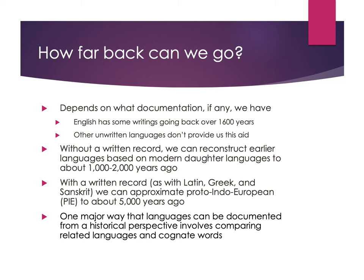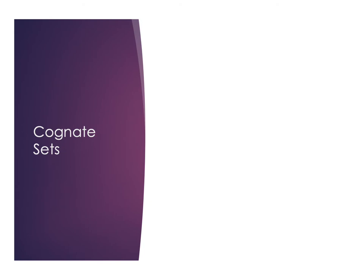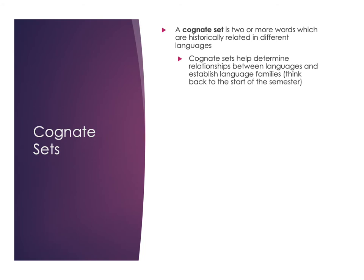One way we reconstruct earlier languages is by comparing related languages and comparing cognate words — words that have similar meanings and similar sounds. Cognates are one of the really important tools in historical linguistics. A cognate or cognate set is two or more words that are historically related to each other in different languages. They help us determine relationships between languages and establish language families, which is one of the main processes used to determine how languages are related to each other.